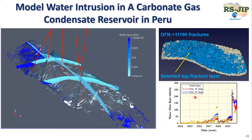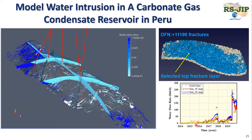Another application in Peru — a carbonate gas condensate reservoir. A similar idea was applied here, including about more than 11,000 natural fractures. This shows the water intrusion process in the complex natural fracture network. For this well, after about five years, we have strong water intrusion, and we can get a better match.